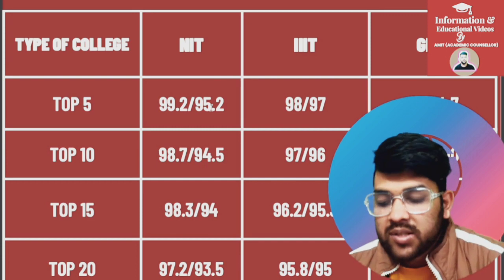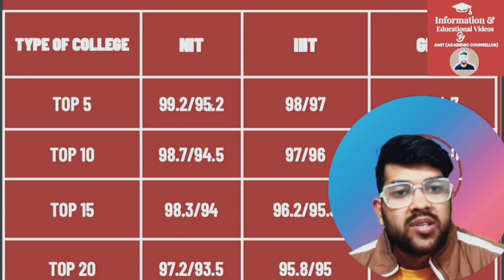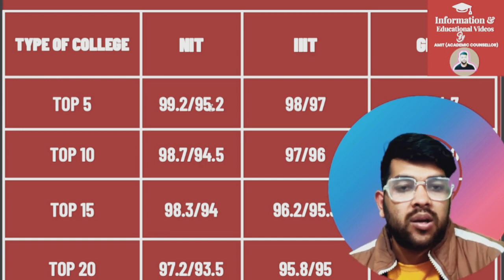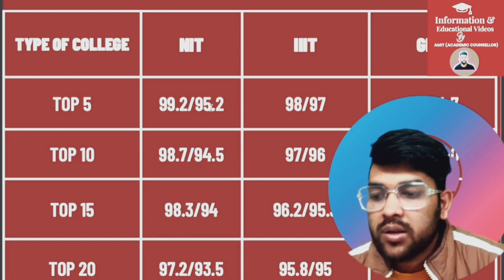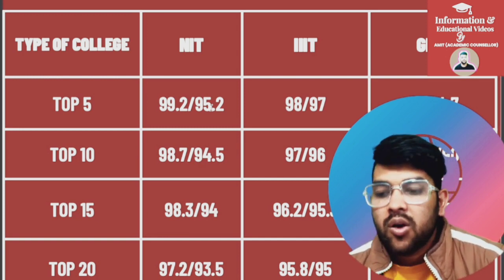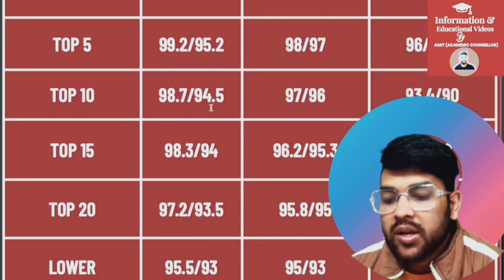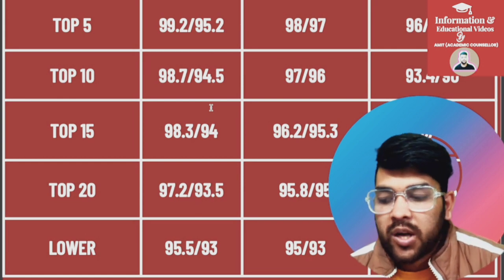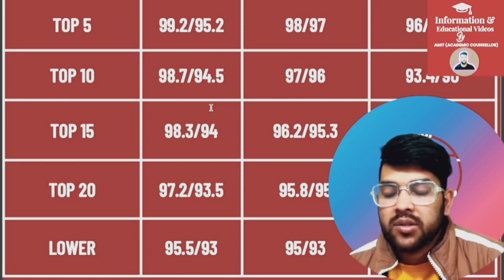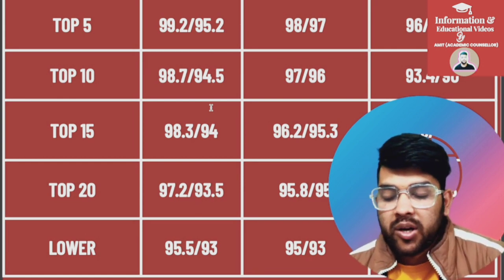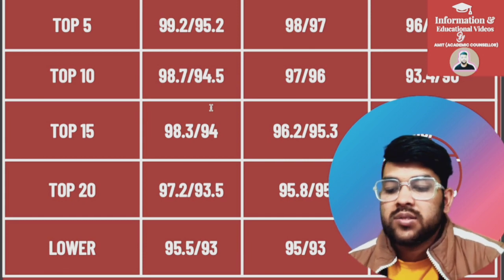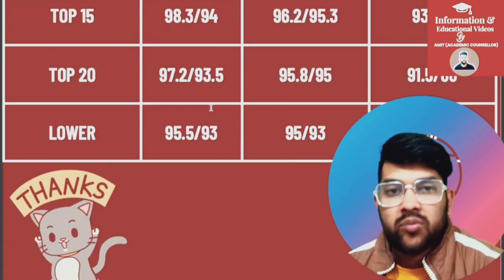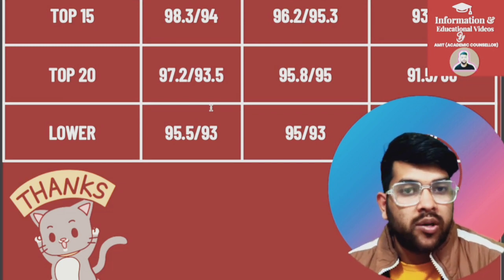For top 20 NITs: 97.2 and 93.5 for CSC and EC branches. For Triple IT: 95.8 and 95 for CSC and EC — noting only two Triple ITs have Mechatronics and Mechanical, so those are excluded; only CS and EC are considered here. For GFTI: 91.5 and 88. For the lowest possible NIT, CSC or lower branch: 95.5 and 93. For Triple IT: 95 and 93. For GFTI: 91.9 and 87 percentile.